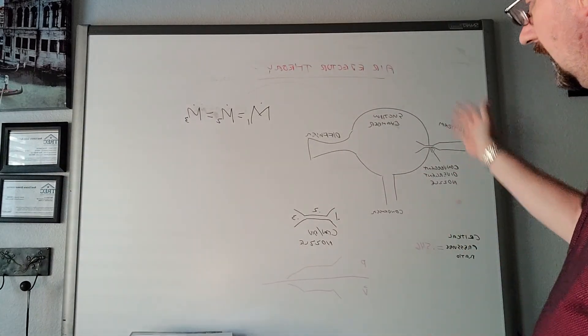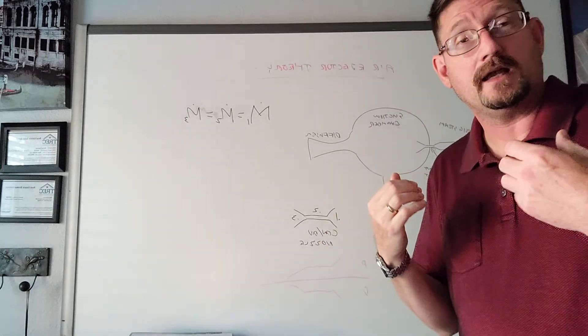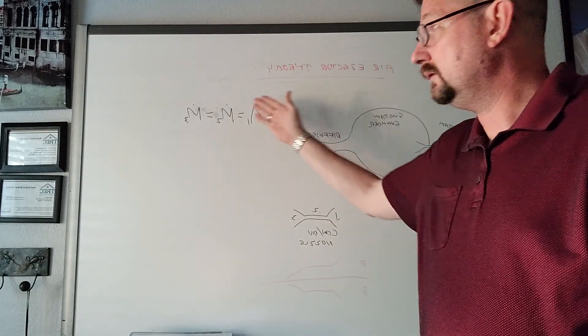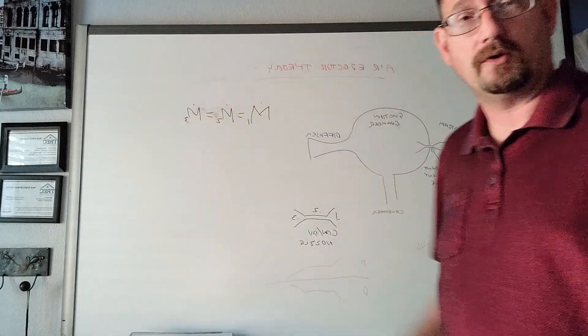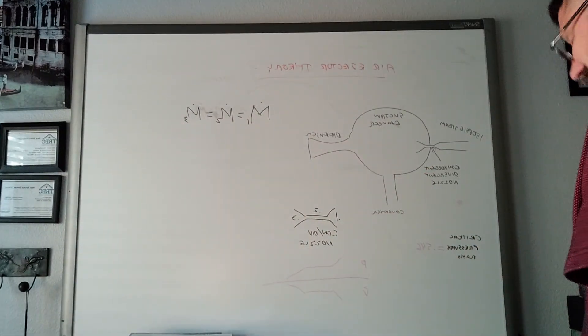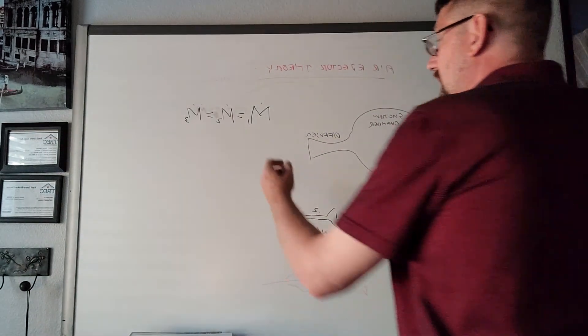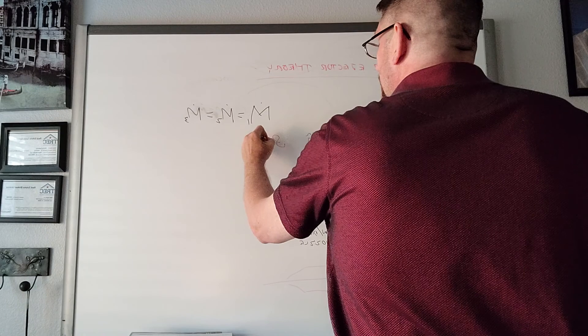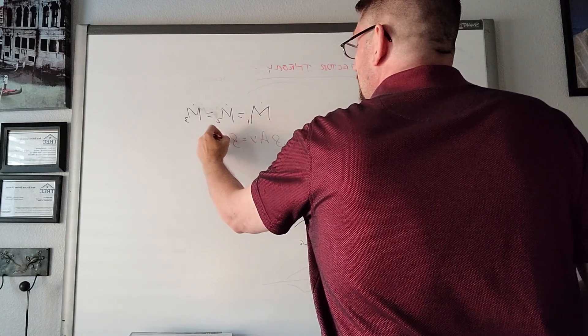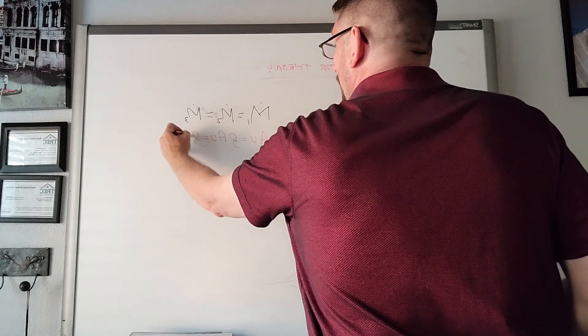With a convergent-divergent nozzle, we understand that a system in steady state has mass flow rate 1 equals mass flow rate 2 equals mass flow rate 3. Breaking that down into base equations: density times area times speed equals density times area times speed equals density times area times speed.